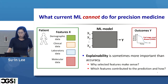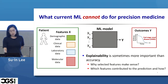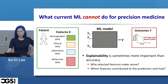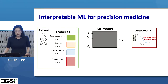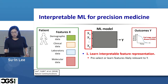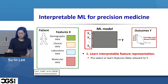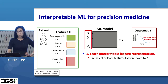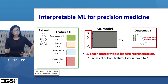For instance, it doesn't tell you why the features selected by the model make sense, or which features mainly contributed to the prediction result. These explanations are really important because they can give us information about appropriate clinical actions or biological mechanisms depending on what the prediction task is. This led us to identify three research problems we need to address to advance the field. First, we want to learn interpretable feature representations, especially when we use high-dimensional molecular data such as gene expression data.